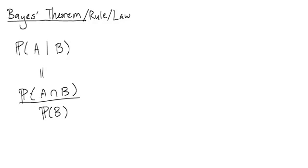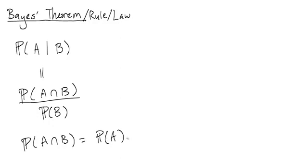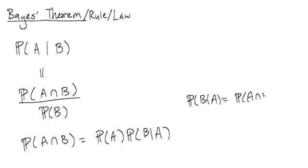Yes, this is true. We have this. And also from the last video that Li Zong did, he talked about the product rule, which is that we can write the probability of A intersect B as the probability of A times the probability of B given A. And how we came up with this was that we wrote the probability of B given A and used the definition of conditional probability, and rearranged this equation to get this.